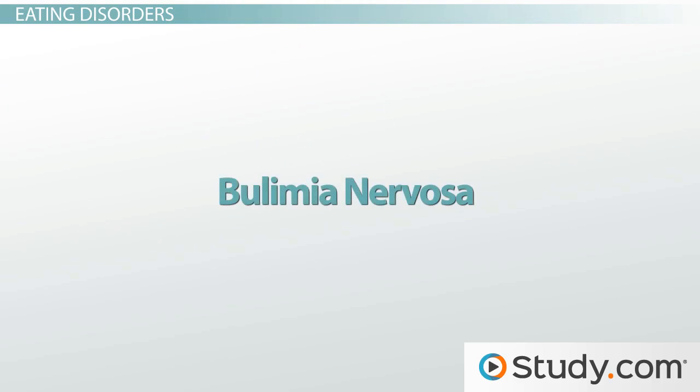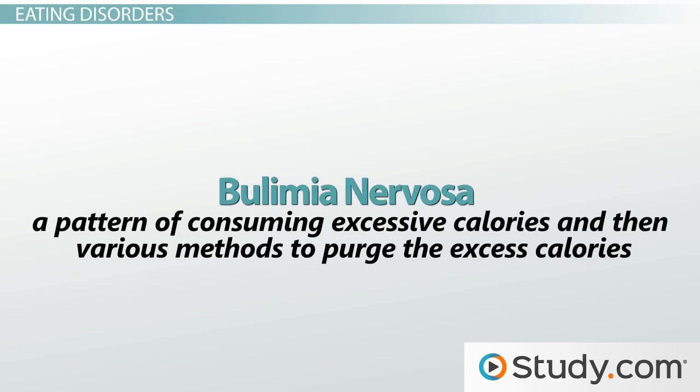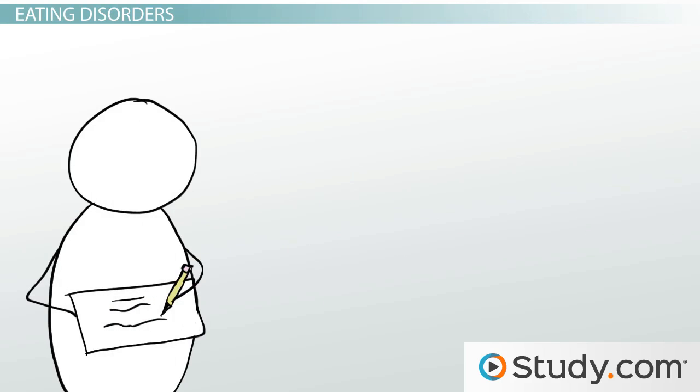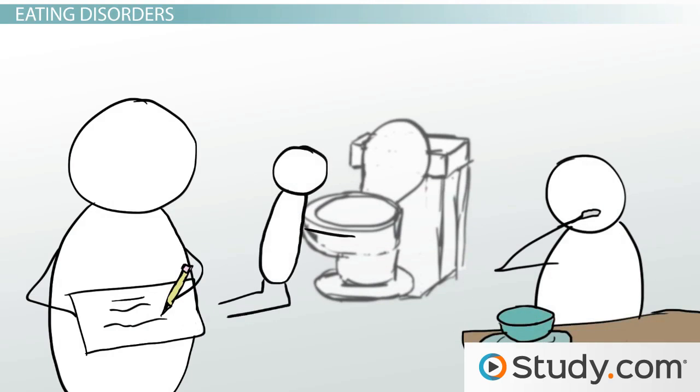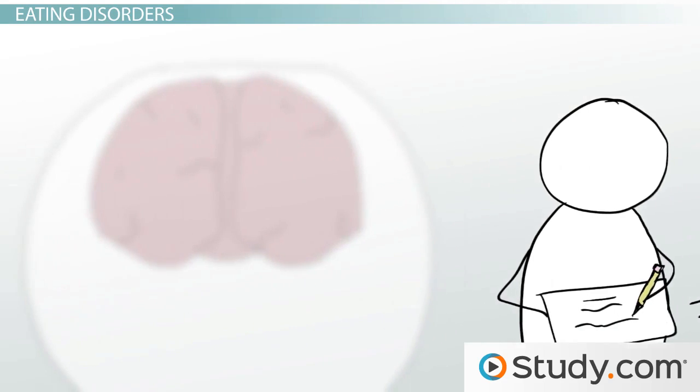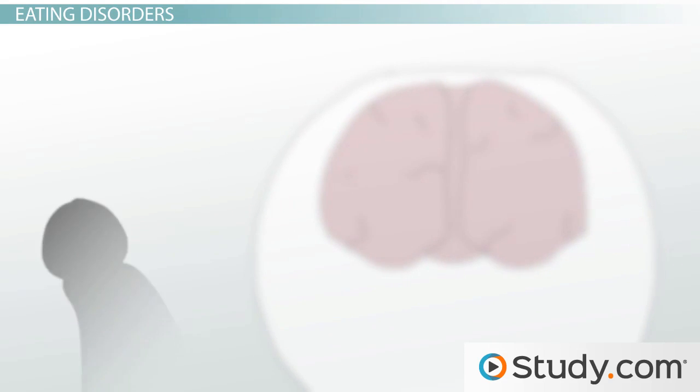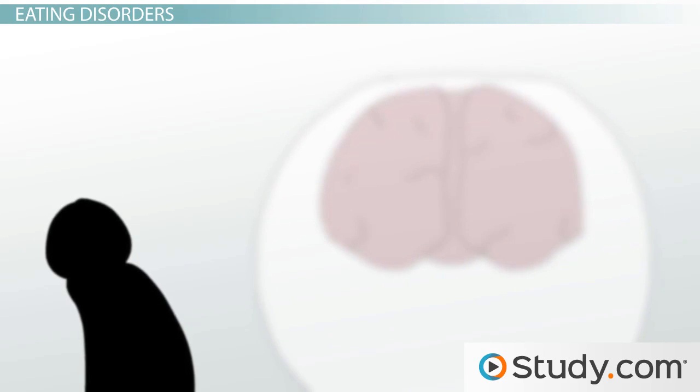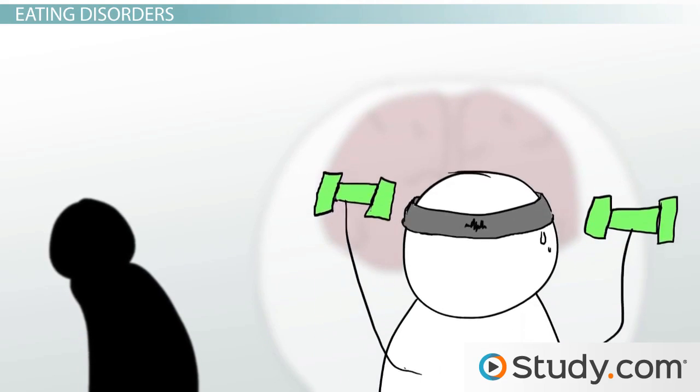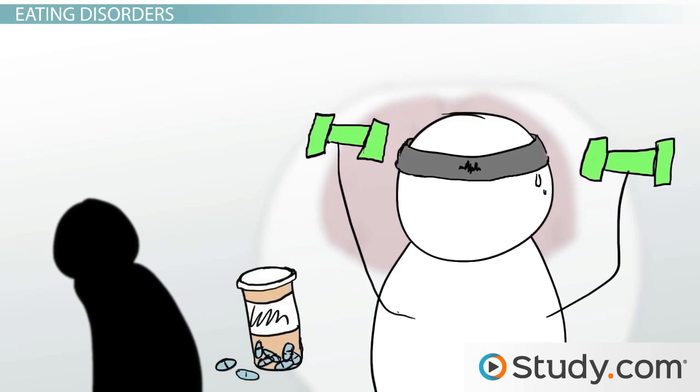Bulimia nervosa is defined as a pattern of consuming excessive calories and then various methods to purge the excess calories. This disorder is commonly thought of as the type where a person eats food and then throws it up. However, the real disorder resists simplicity since not everyone throws up. Some over-exercise while others take laxatives or other medications.